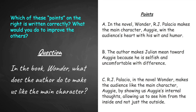Now that we've seen some examples of how the points should work, let's take a look at some different options for points and evaluate them. For this example, we're looking at the book Wonder. The question is: in the book Wonder, what does the author do to make us like the main character? Read all three points on the right. Identify which point is the best, the second best, and the worst.